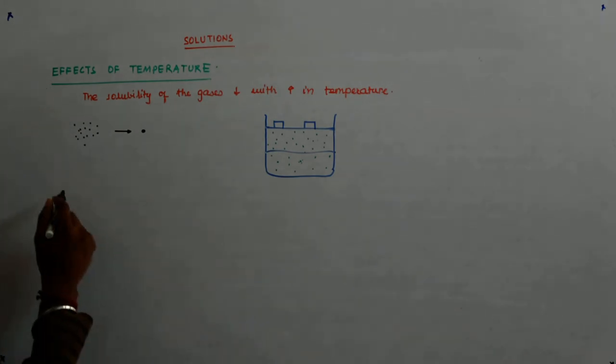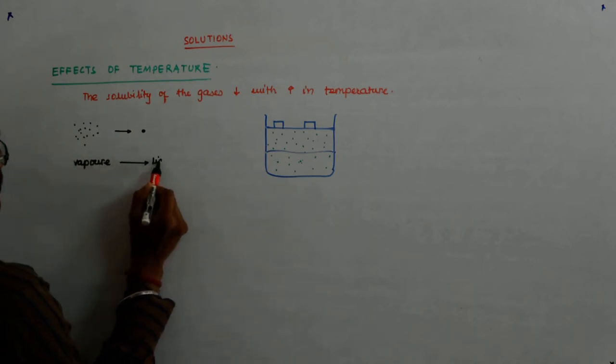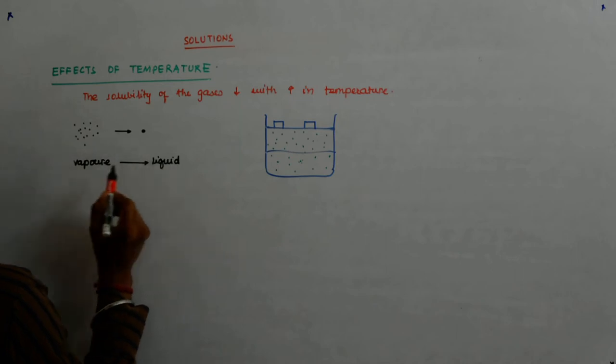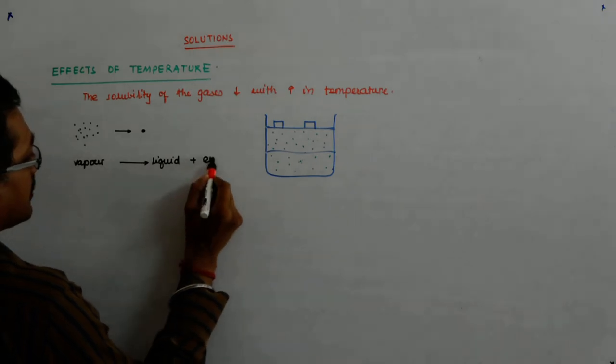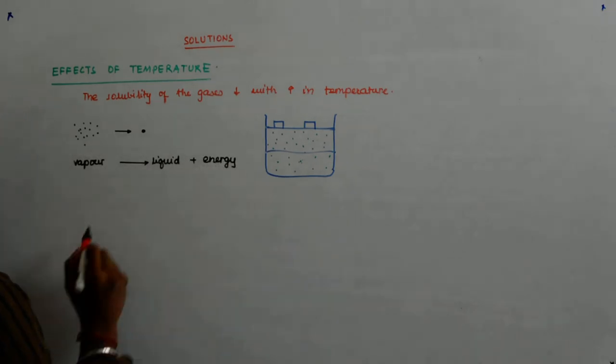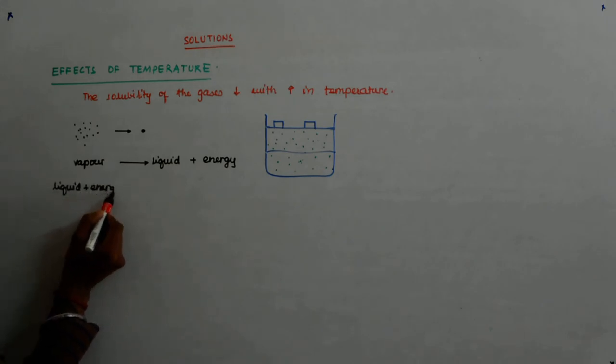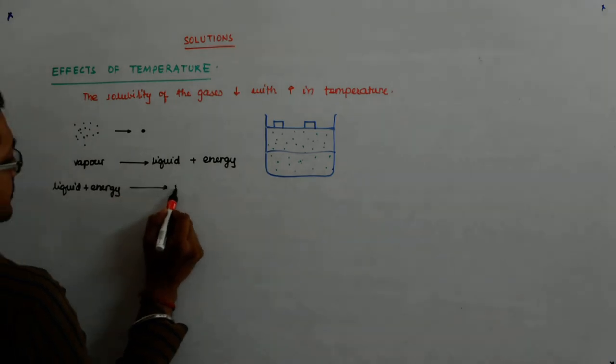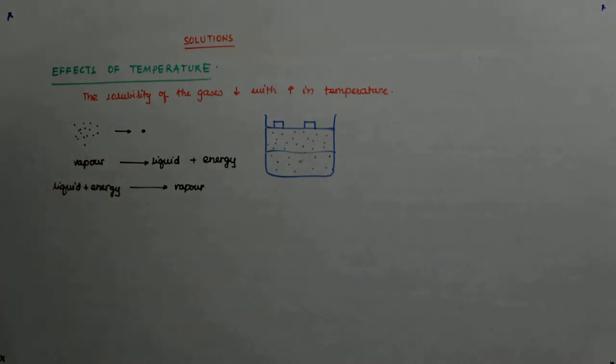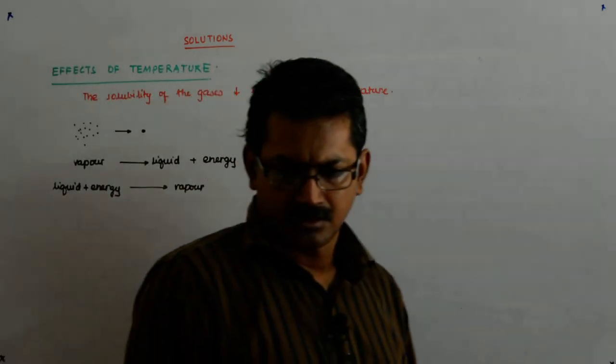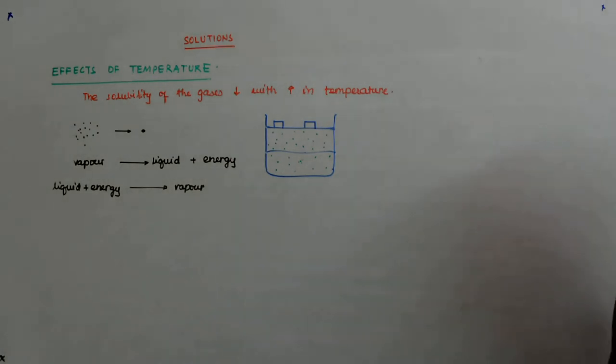So you understand? So from the vapour to the liquid phase, you have vapour. Vapour gives me liquid plus energy. And you must be quite aware that liquid plus energy gives you vapour, obviously. This is quite intuitive but this is not. That's why when a wet cloth becomes dry, you know, a cold atmosphere is created around it.